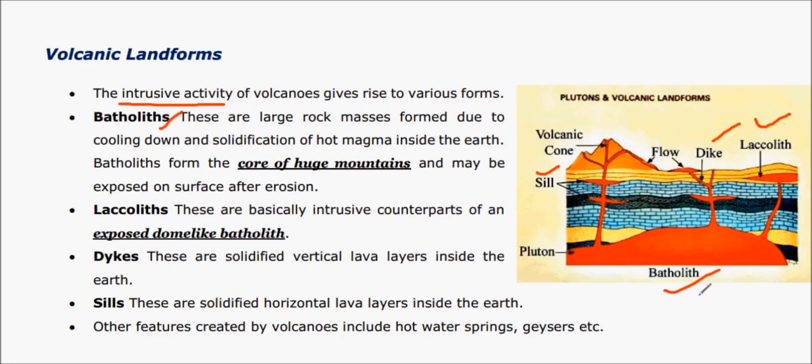A mass of magma cools well below the Earth's surface, giving rise to a huge mass of rock. This is called batholith. Huge mountains settle on these kinds of rocks which are cooled deeper inside the Earth.